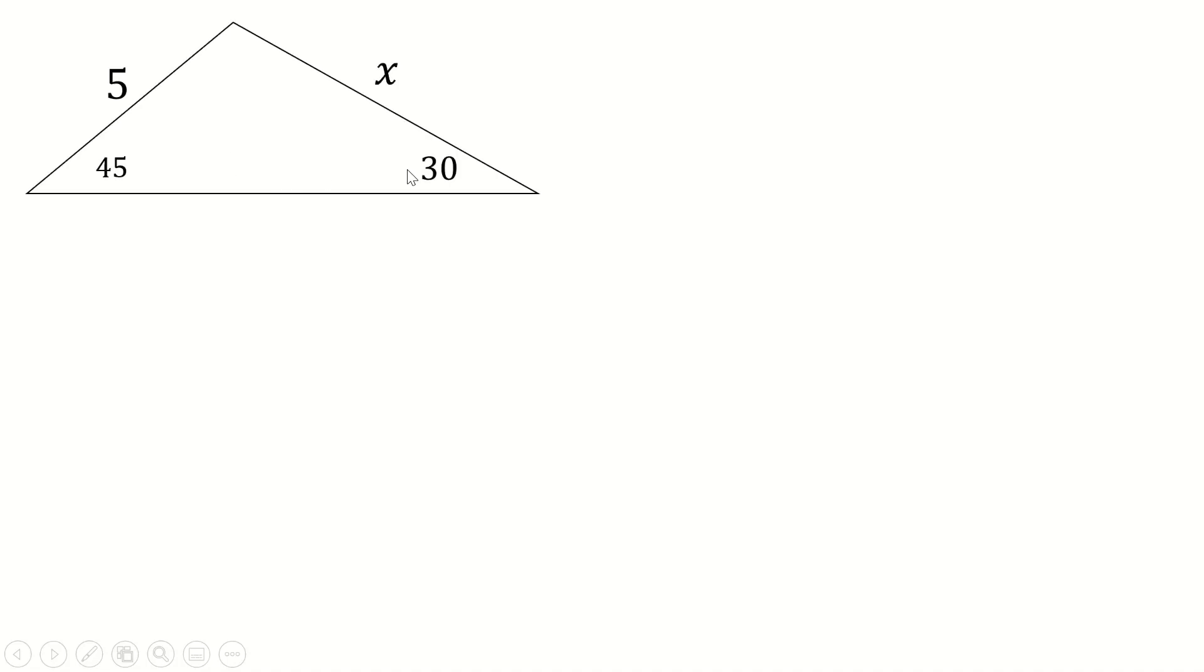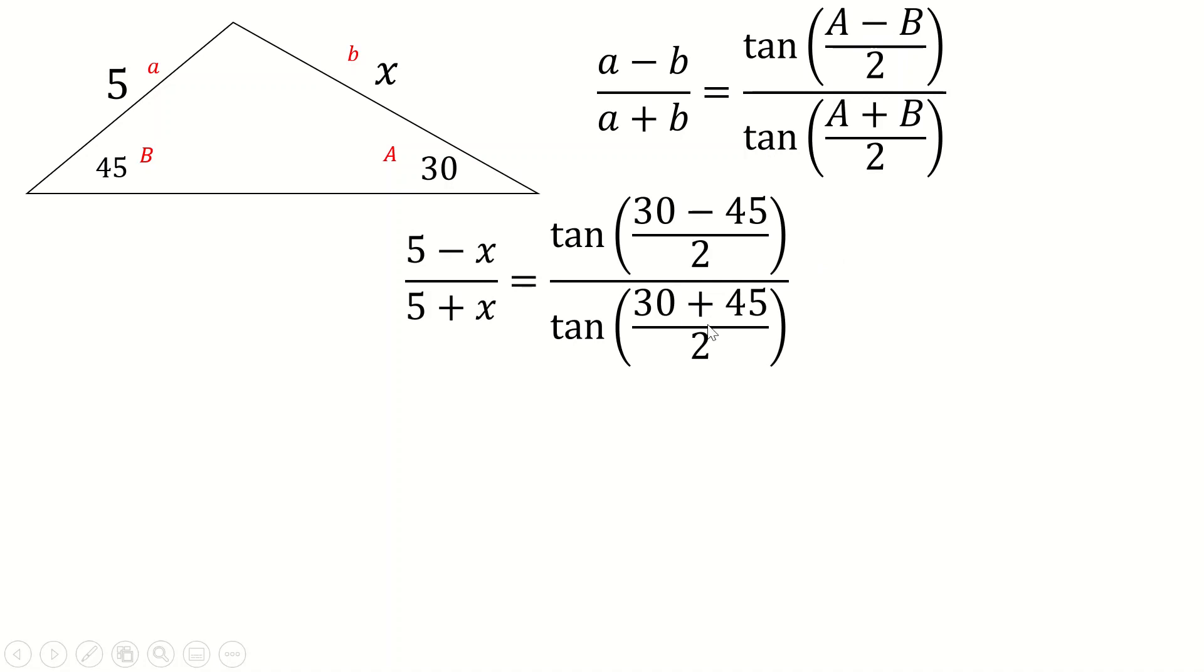And you can use this to solve this setup if you really want to. For example, let's do it on this. So here's the tan rule. You can pause the video and try and give this a go straight away if you want to. Let's label some stuff up first. So if we call this A, that makes this big A. And let's of course call this B, and that makes this big B. Then we can just put everything in. So little a is five, little b is x. So it's going to be five minus x over five plus x. And then big A is 30, little b is 45.